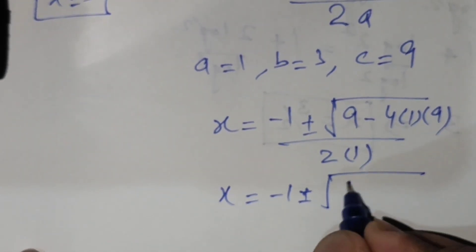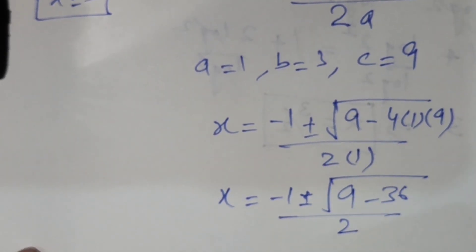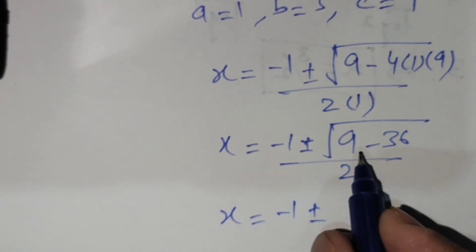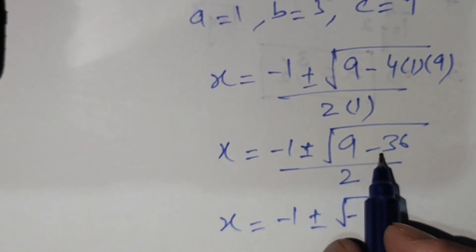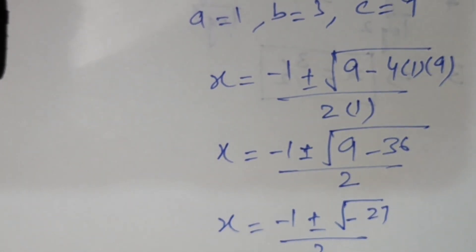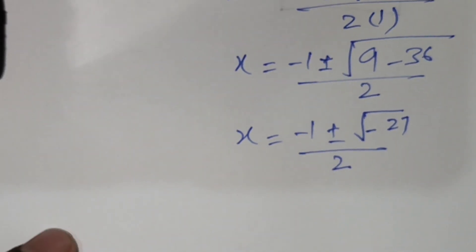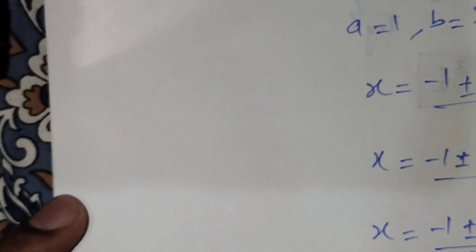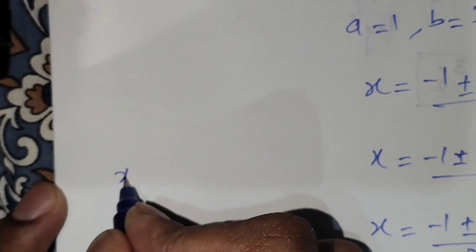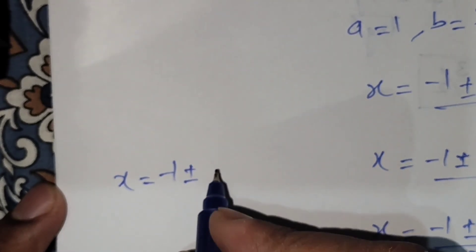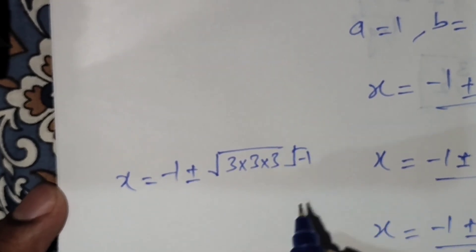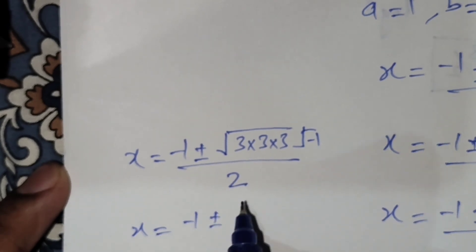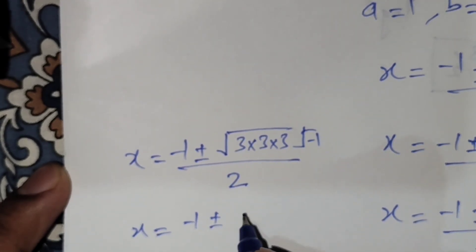Substituting the values: x equals minus 1 plus or minus the square root of (9 minus 36) all over 2, which gives minus 1 plus or minus the square root of minus 27 all over 2. Simplifying, x equals minus 1 plus or minus 3 times the square root of 3 times the square root of minus 1, all over 2.